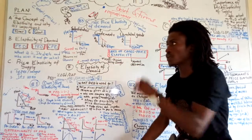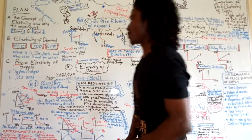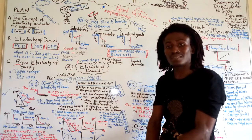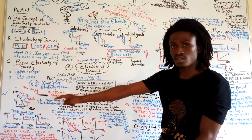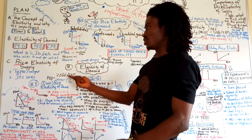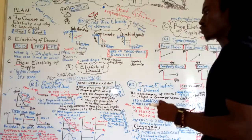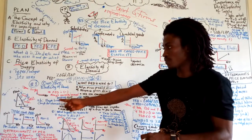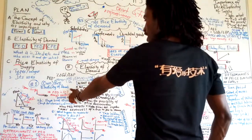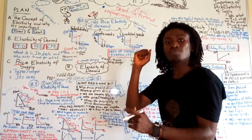We'll first look at the idea of elasticity of demand, and then we'll look at elasticity of supply. Our most important focus is on price elasticity. When we talk about elasticity of demand in general, we are referring to the price of the good — the own price. So: what is the percentage change in the quantity demanded of a good, given the percentage change in the price of that good itself? The key idea here is that price elasticity of demand is negative, because price and quantity demanded, as we talked about in the law of demand, move in opposite directions.